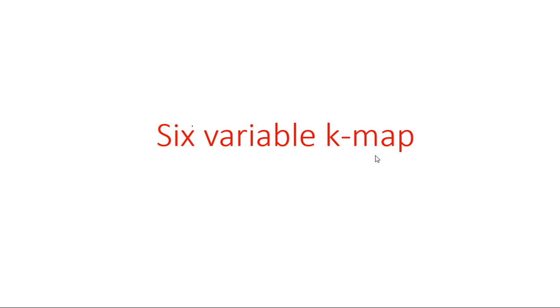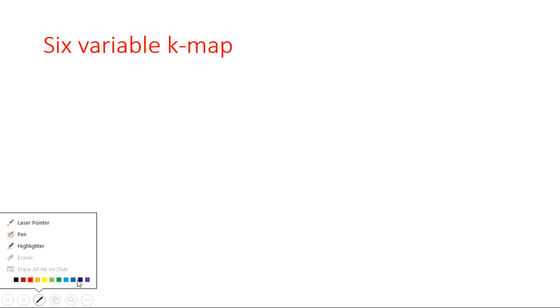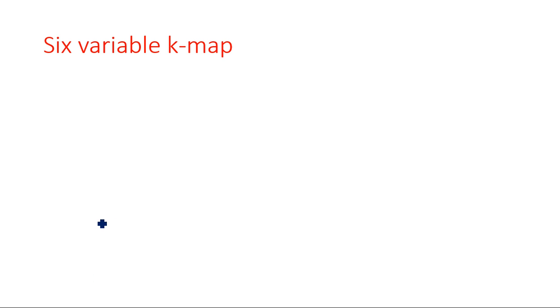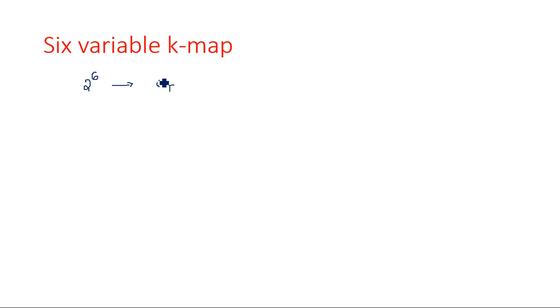In this video, I am going to introduce a six-variable K-map, which is the next step after the five-variable K-map. In the five-variable K-map we had 2^5 = 32 minterms. Here in the six-variable K-map, with six input variables A, B, C, D, E, F, we have 2^6 = 64 combinations, meaning there are 64 minterms.